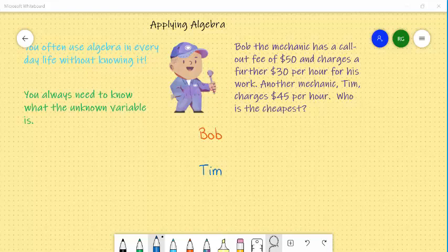So in this case, Bob the mechanic has a call-out fee of $50. Now it's important that you understand some terminology. If English is your second language, these can be quite tricky and may require some external assistance. In this case, a call-out fee is often used in these questions and refers to someone being called to your house or wherever you are, and they charge you in this case $50 no matter whether they're there for 20 hours or two minutes. They start off with a fee of $50, and in this case they then charge a further $30 for every hour he works. Another mechanic, Tim, charges $45 per hour but no call-out fee. The question is, who is the cheapest?